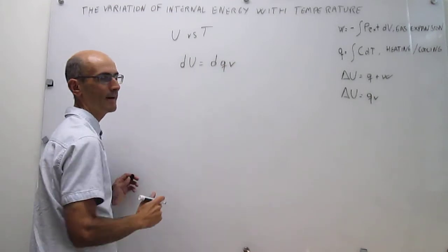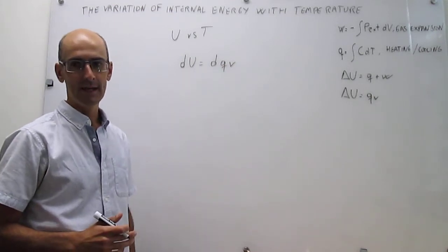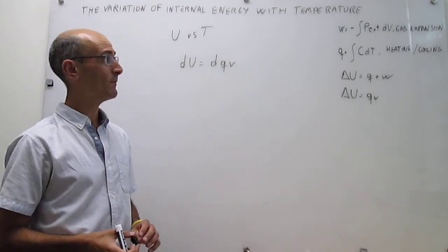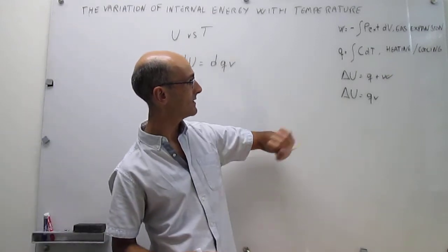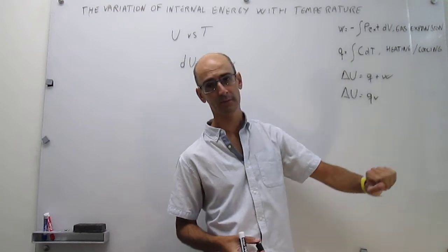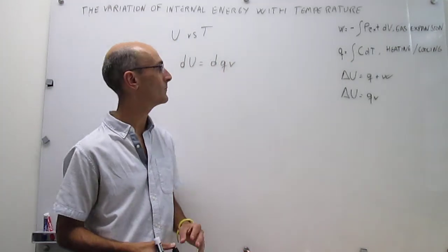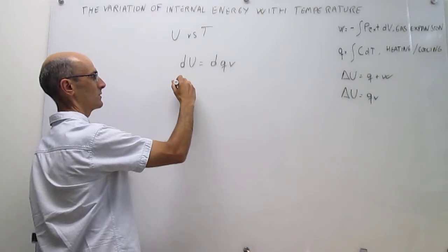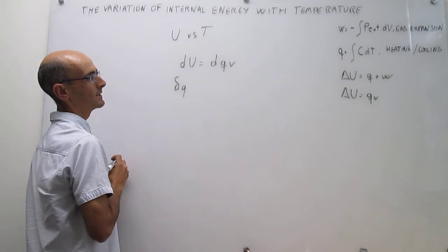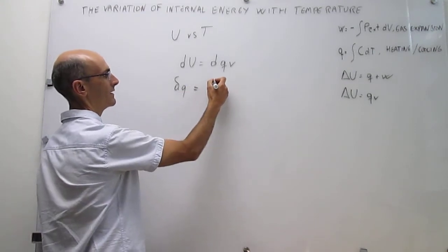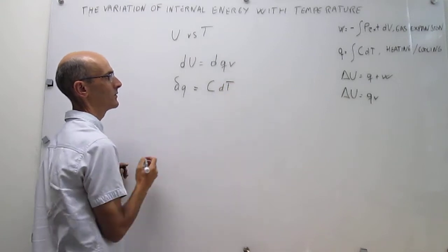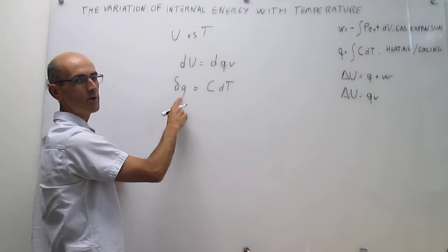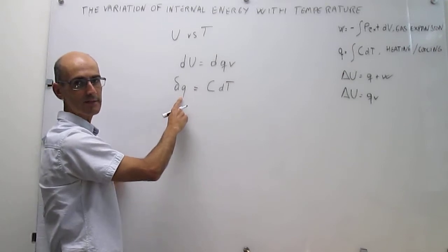We have the differential of heat, and we actually know how the heat changes with temperature. Notice that this gives how the heat changes upon heating or cooling. So we can write that expression in differential form as well: dQ = C·dT, where C is the heat capacity. These are the two expressions, and notice that what we have is almost the same, but after specifying a constant volume path.